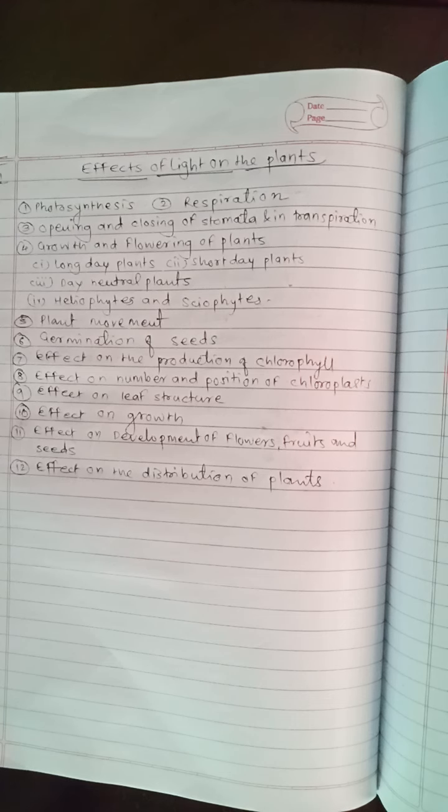Day neutral plants: plants which show little response to length of day light are called day neutral plants. For example, cotton, balsam, tomato plants.